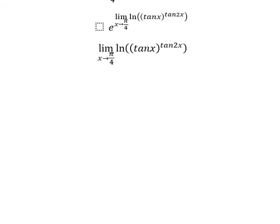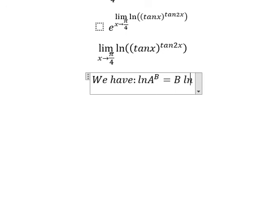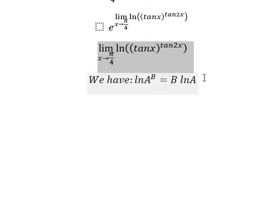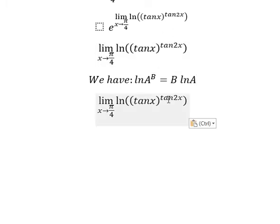Next, we have the second formula in here. That is about ln A to the power of B equals to B ln A. So we put tan 2x go outside about natural log in here.